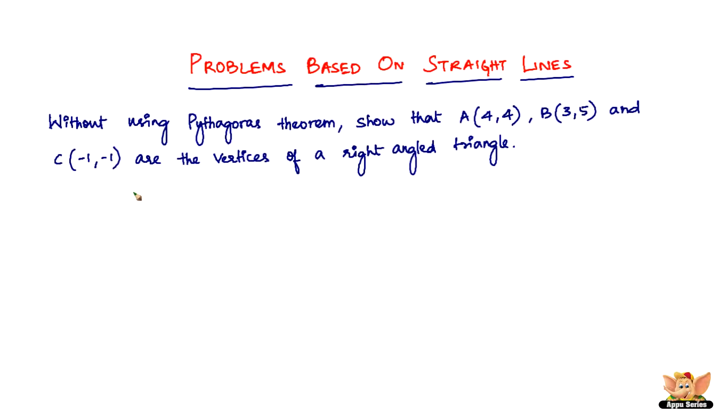So let's see how we solve this problem. In the triangle ABC, let us randomly choose two lines. Let's choose AB and AC. Let's find the slopes of those. The slope is m equals y2 minus y1 divided by x2 minus x1 because the coordinates of the points are given. So now let's find the slope of AB.